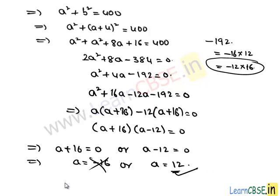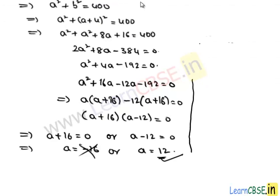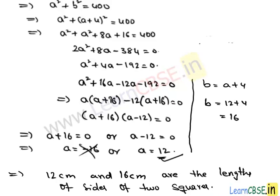So the length of one square is 12 centimeters, and we know the relation with another side which is B, and it equals A + 4. So B equals 12 + 4 which is 16. So the sides of two squares are 12 centimeters and 16 centimeters, and this completes our solution.